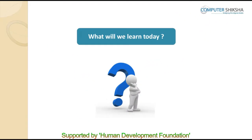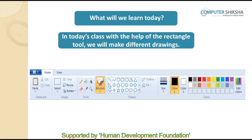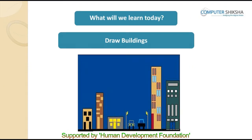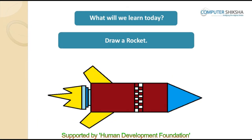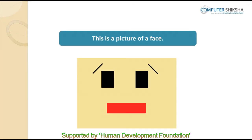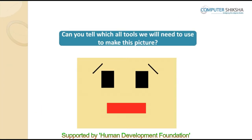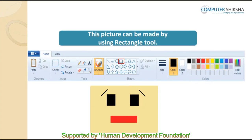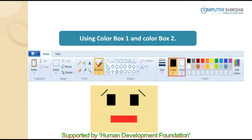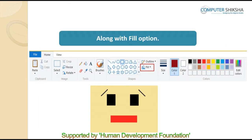In today's class, with the help of the rectangle tool, we will make different drawings. These drawings will be a face, a building, a car, and a rocket. Look at the given picture and tell what is shown here. This is a picture of a face. Can you tell which tools we will need to use to make this picture? This picture can be made by using the rectangle tool, color box 1 and color box 2 along with the fill option.